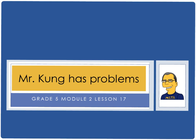Hello and welcome to another episode of Mr. Kong Has Problems. Today in grade five, we are working on module two, lesson number 17. Today we are using basic math facts to approximate quotients with two-digit divisors. So we're basically just doing some estimating today.